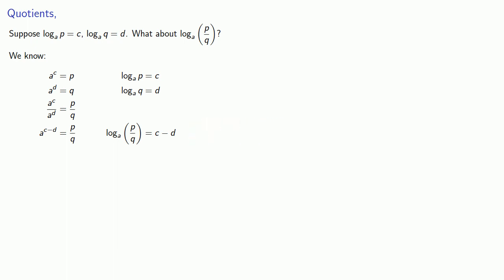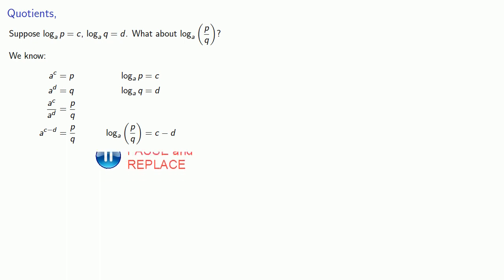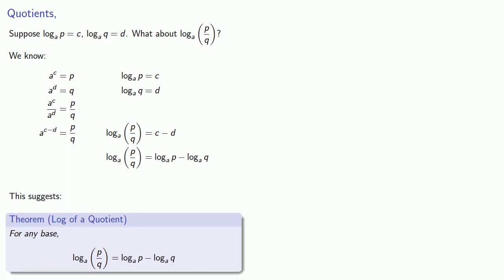Equals means replaceable: every time we see c we replace it with log base a of p, and every time we see d we replace it with log base a of q. This suggests a general result: for any base, the log base a of p over q is the log base a of p minus the log base a of q. The log of a quotient is the difference of the logs.